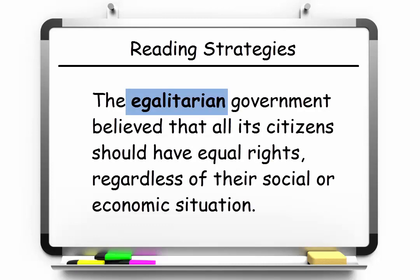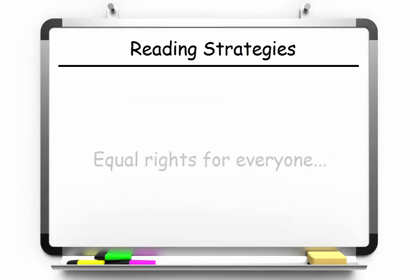The egalitarian government believed that all its citizens should have equal rights, regardless of their social or economic situation. So now that I see how this word is used within a larger context, I can use the surrounding words to try and figure out what it means. From its use in this sentence, it seems to have something to do with equal rights for everyone.